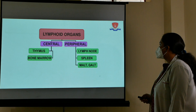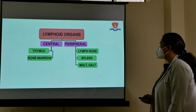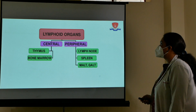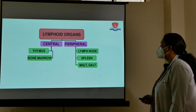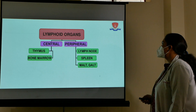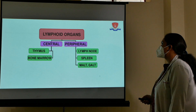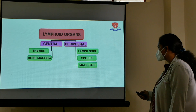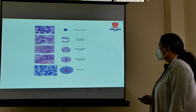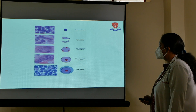Lymphoma. As you all know, lymphoid organs are of two types: central and peripheral. Central lymphoid organs include the thymus and bone marrow. Peripherally located organs include lymph nodes, spleen, mucosa-associated lymphoid tissue (MALT), and gut-associated lymphoid tissue (GALT). This is the normal histology of the cells present in lymph nodes and other lymphoid organs.